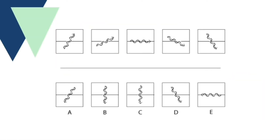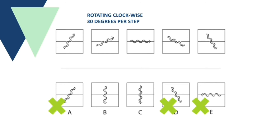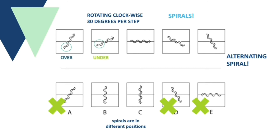Here is another pattern problem. The arrows are rotating 30 degrees clockwise in every step, so the next orientation of the arrow must be pointing downwards. Letters A, D, and E are automatically wrong. At first glance, letters B and C look exactly the same, but upon further observation the curved line in the arrow is actually a spiral — the curved line overlaps and is under the arrow in certain areas. The difference between B and C is that the spiral is oriented differently. Following the pattern — over, under, over, under, over — the next must be under. So letter C is the final answer.